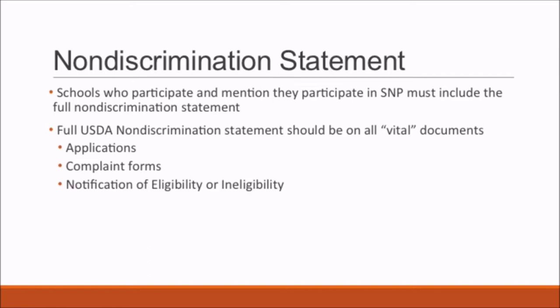These vital documents might include application forms, the notification of eligibility or ineligibility, the notice of adverse action form, and the program webpage. Note that the statement is not required on every page of the program website; at a minimum, the full Nondiscrimination Statement or a link to it must be on the home page. A link to the statement in other frequently encountered languages should also be included.